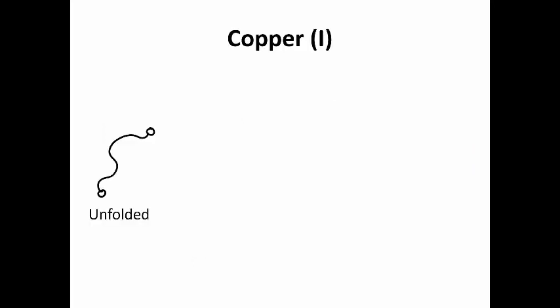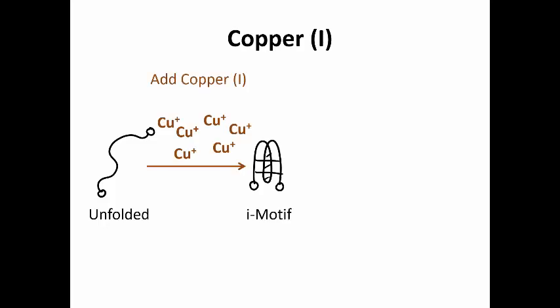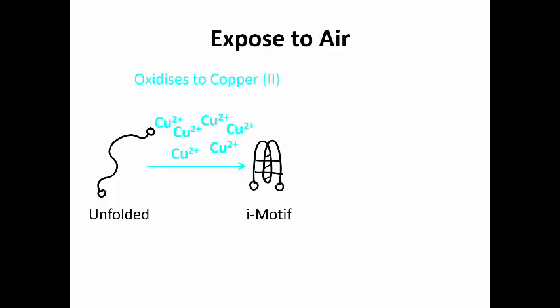So what can copper 1 do with DNA? To work with copper 1, you need to make sure it won't form into copper 2. This can happen in the presence of oxygen or air, so we did all of our experiments in conditions without oxygen. We took a small piece of DNA, we add copper 1, and the DNA folds into a structure called i-motif. Then if we expose this to air where there is oxygen, the copper changes from copper 1 to copper 2.